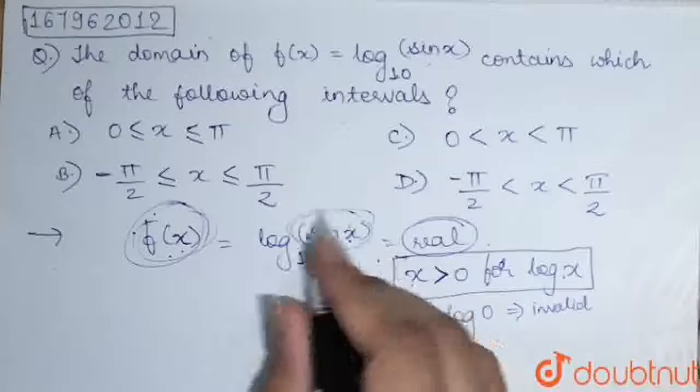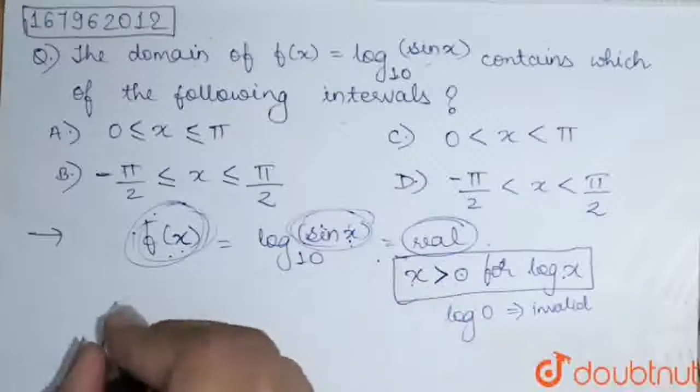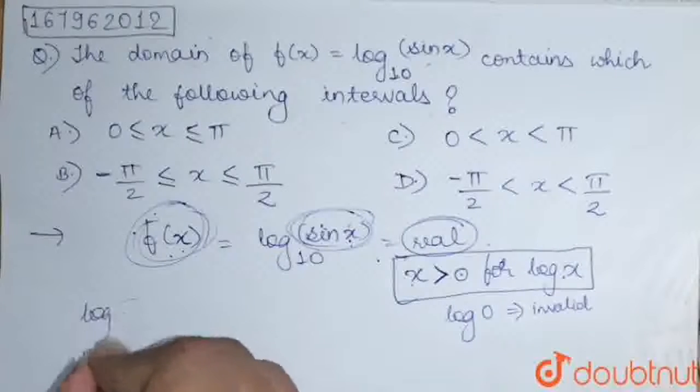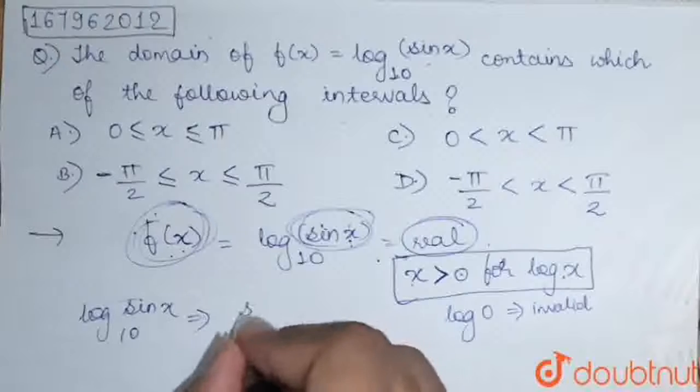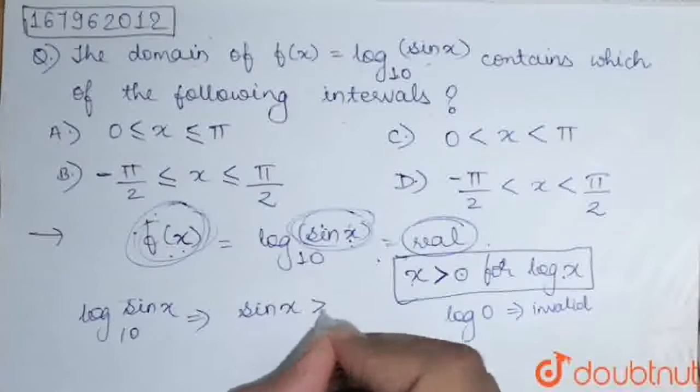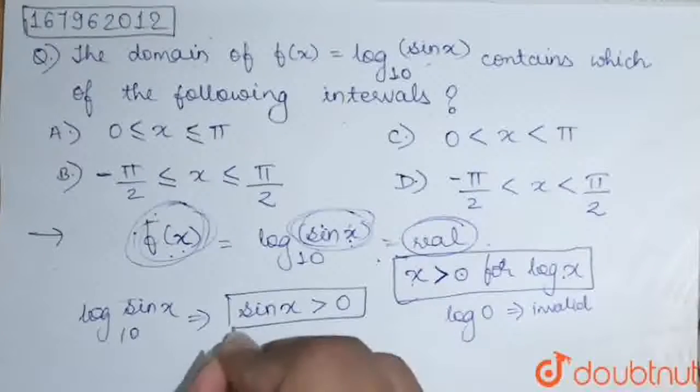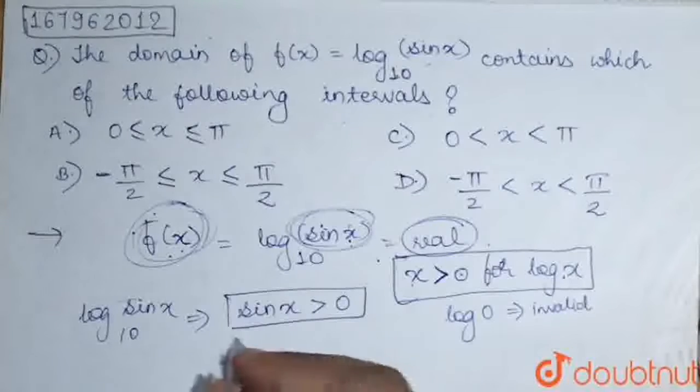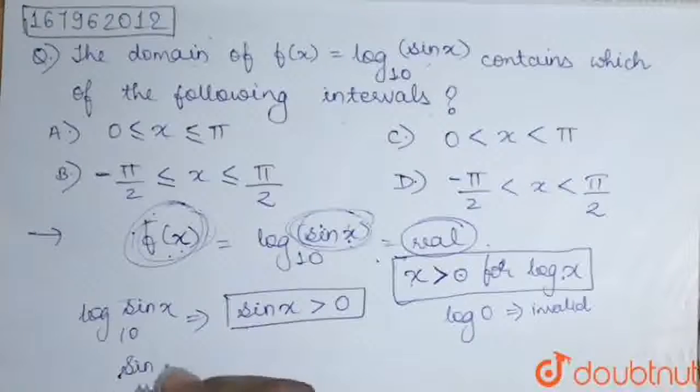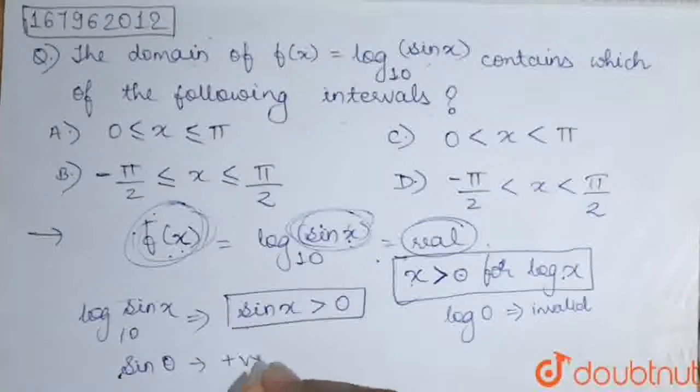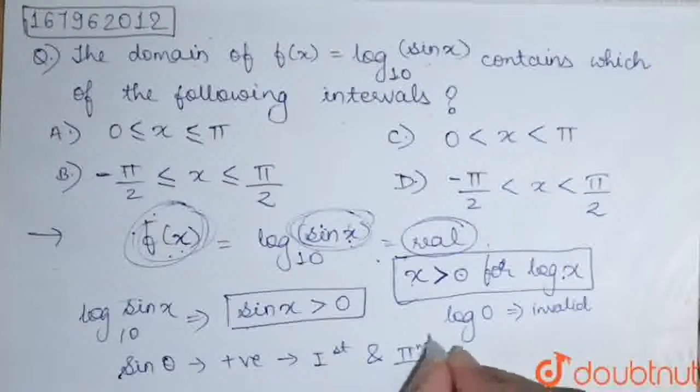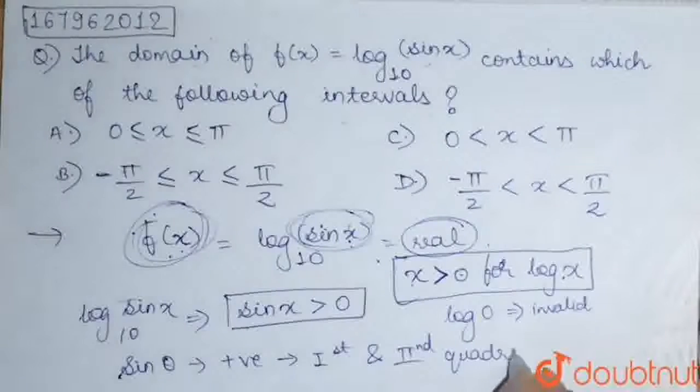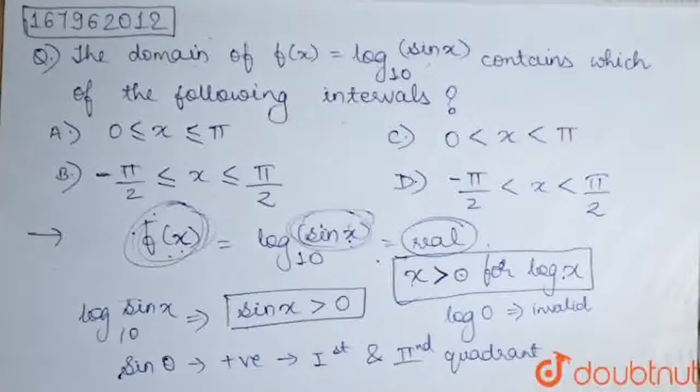So here, our form of this is sin x. That is, log sin x base 10. So sin x should be greater than 0. And we know that sin theta is positive in first and second quadrant.